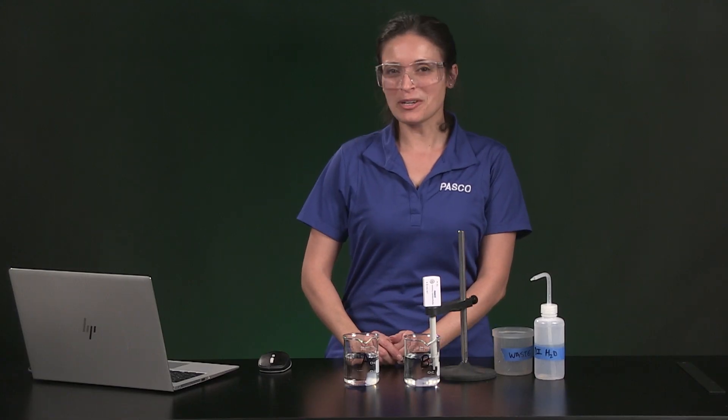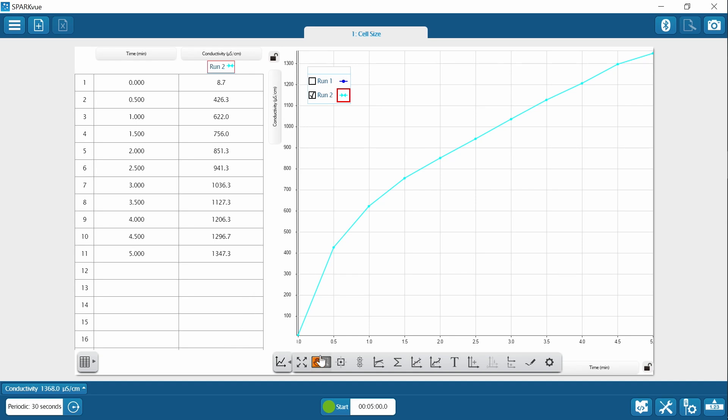You can use the coordinate tool in SparkView to see what the initial and final conductivity values were. When I turn on the tool, I can move the gray box and set it to whatever data point I want. And I can remove it by clicking the X.